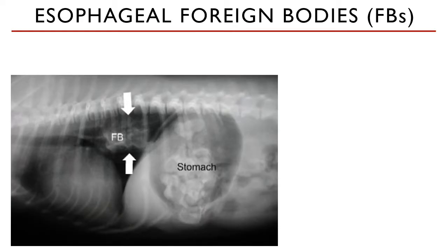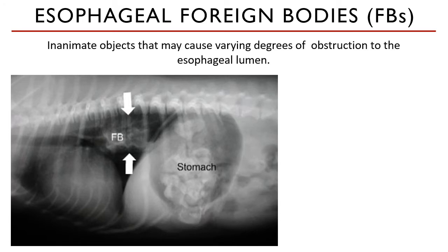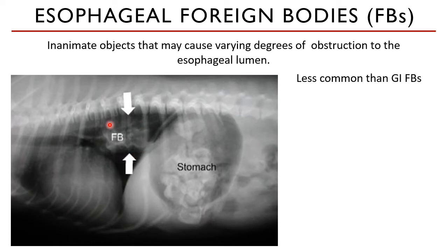Esophageal foreign bodies can be inanimate objects which may cause varying degrees of obstruction through the esophageal lumen. They may lodge into the esophagus due to being too large, or they have sharp edges that become embedded in the mucosa, which is very dangerous. These are less common than gastrointestinal foreign bodies. In the radiographic image shown, a radiolucent material is seen in the area of the thoracic esophagus.